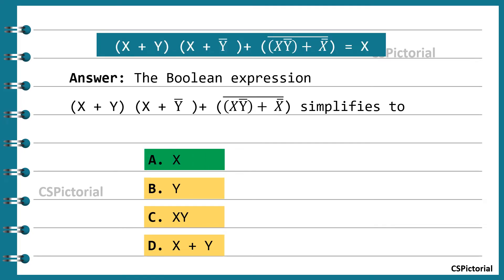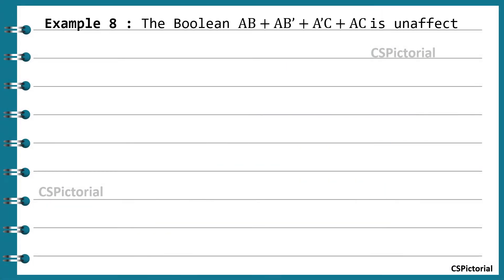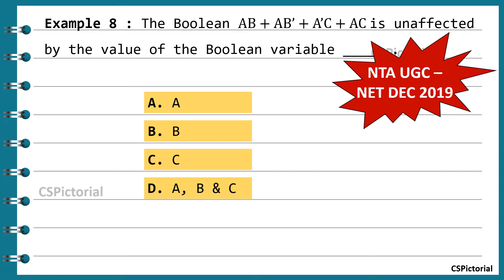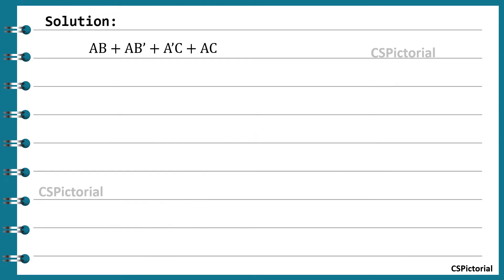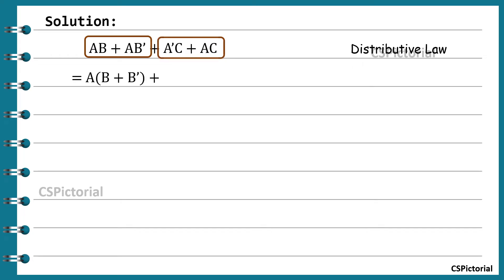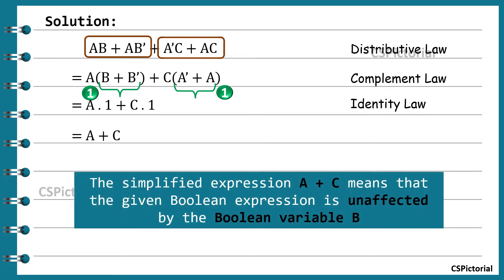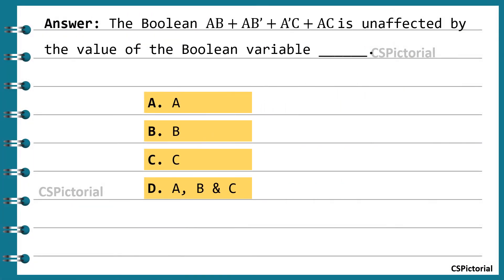The next question is from an NTA NET previous paper. The Boolean expression ab + ab̄ + āc + ac is unaffected by the value of which Boolean variable? We simplify the expression; the variable absent from the simplified result is the answer. The simplification is done in just three steps. Since variable b is not present in the simplified expression, the given Boolean expression is unaffected by the variable b — so the answer is option b.